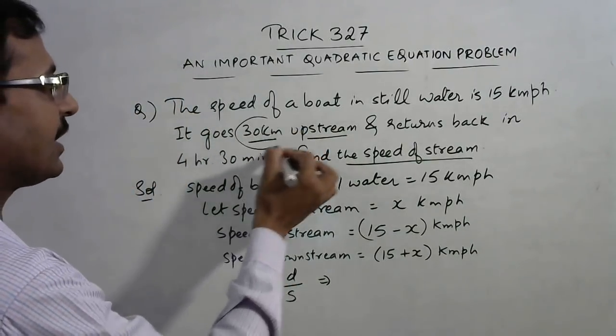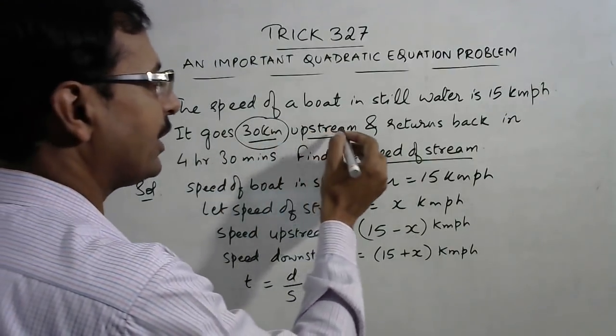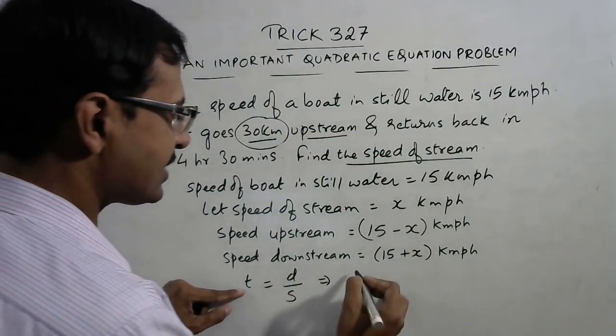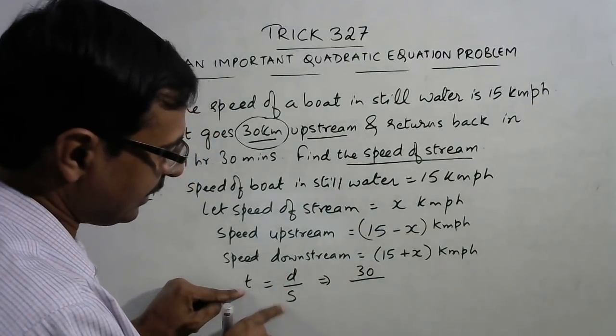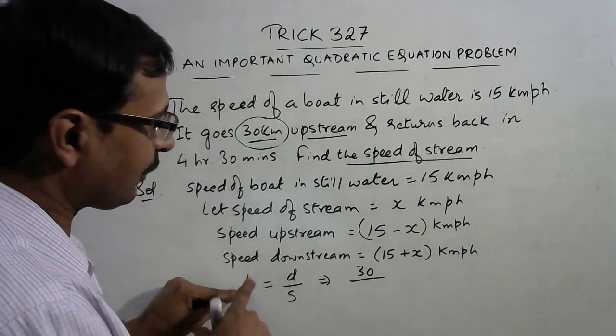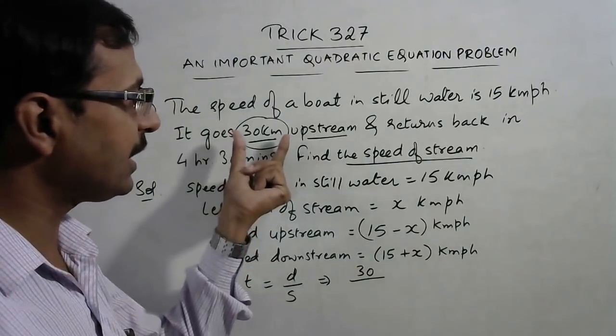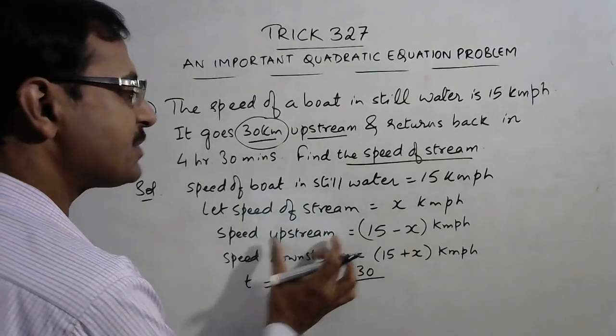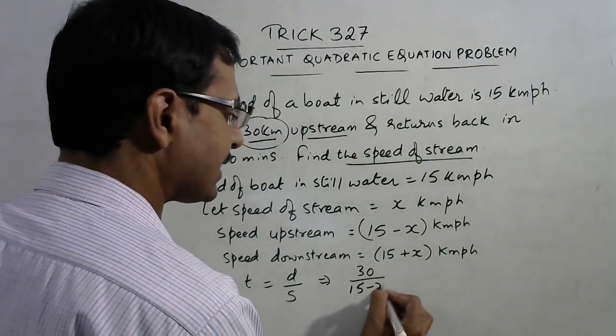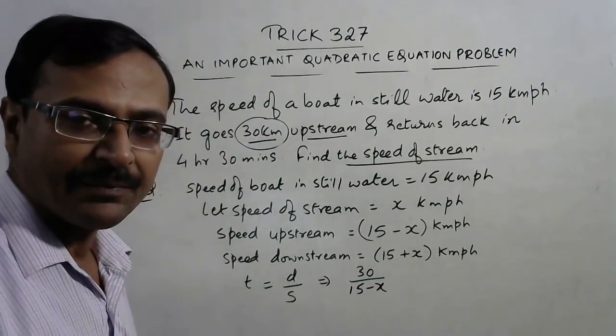Now distance is 30 km, it goes 30 km upstream. So the distance is 30 km and distance upon speed is time. We are trying to find out the time to go 30 km upstream. So 30 km is the distance and speed upstream is 15 minus x.